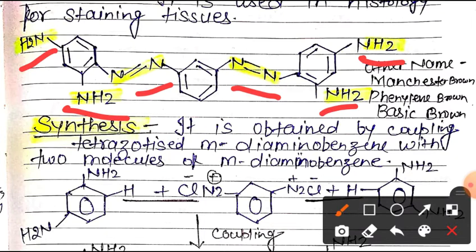Other names: Bismarck brown is also called Manchester brown, Phenylene brown, and Basic brown.